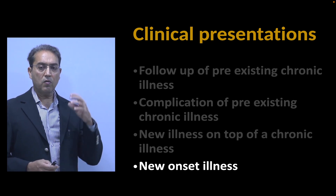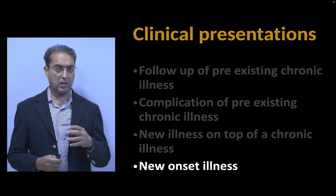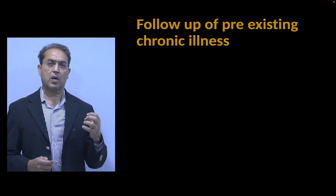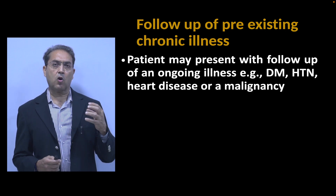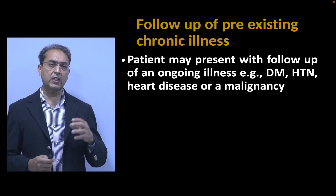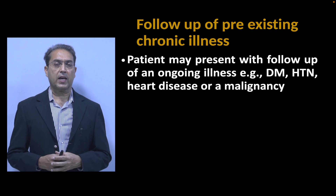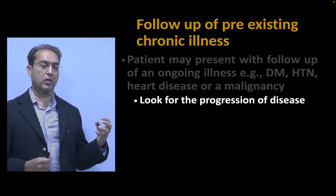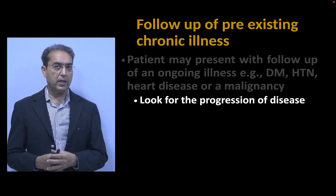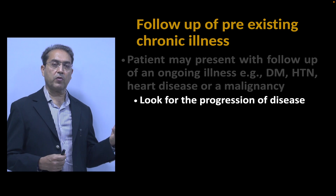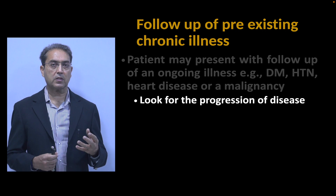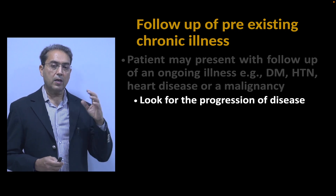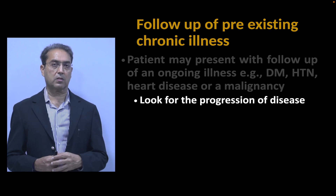When patients present with an ongoing chronic illness — such as diabetes, hypertension, heart failure, or malignancies — and they come for follow-up, you should look for the progression of the disease. For example, in ischemic heart disease, if a patient previously had angina walking 500 meters but now develops pain walking only 200 meters, the disease is progressing. So assess the progress of the patient's ongoing chronic illness.